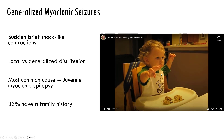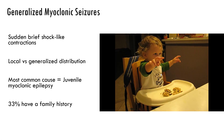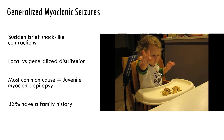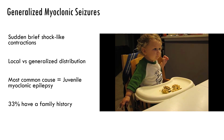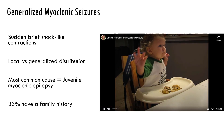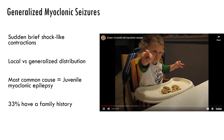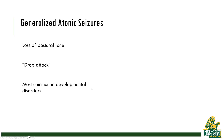These are shock-like generalized contractions. They can be local or generalized. There is a specific type of epilepsy called juvenile myoclonic epilepsy, of which many of these kids have a family history — about a third.